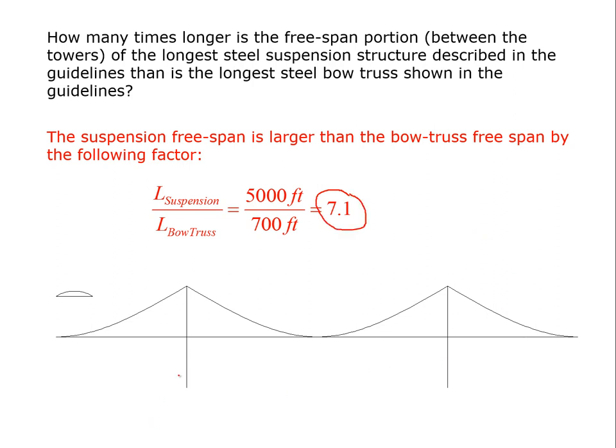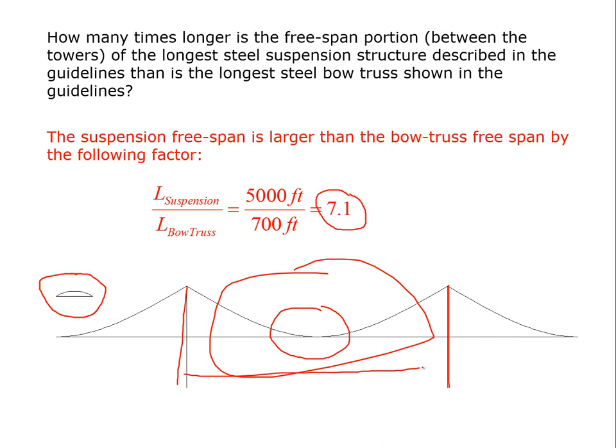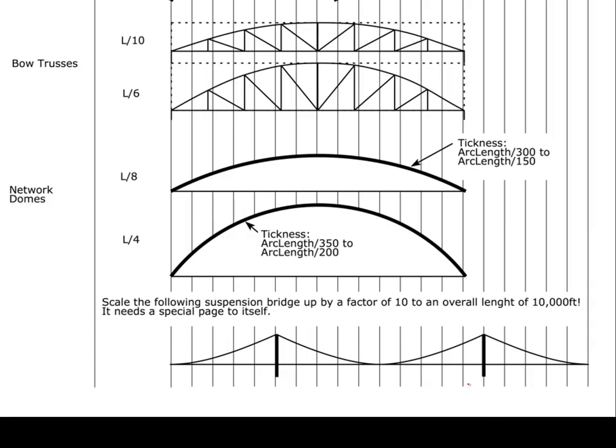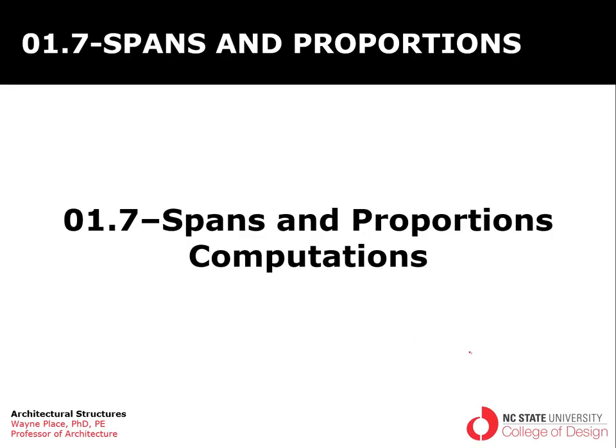And just to help you with the scale of this, we couldn't do this in the book because we would have required a page for this, which would have been extraordinarily wide. So we're drawing it here. This is the 700 foot bow truss. And this is that suspension bridge of roughly a 5,000 foot span from there to there, roughly a mile. It's a rather sobering comparison, which I want to make here because it didn't come across quite in the book, where this thing was drawn on the same page, but it was understood that it needed to be scaled up by a factor of 10. That ends our discussion of computations for spans and proportions.